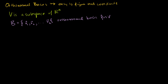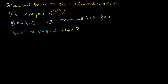We've seen many times before that if I have just any member of Rn — so let's say I have some vector x that is a member of Rn — then x can be represented as a sum of a member of V, as some vector v that is in our subspace, and some vector w that is in the orthogonal complement of our subspace. Where v is a member of my subspace, and w is a member of my subspace's orthogonal complement.